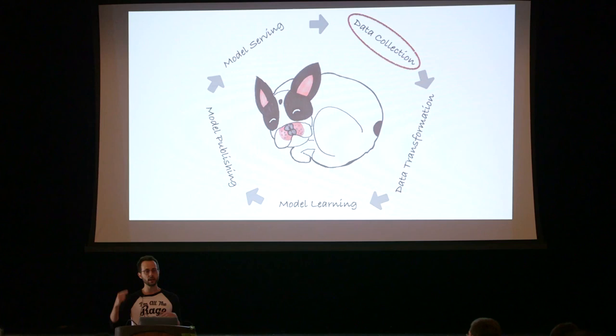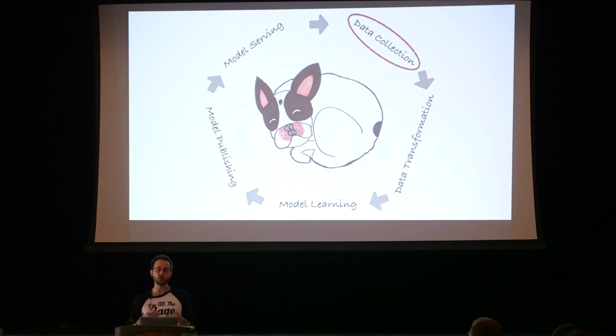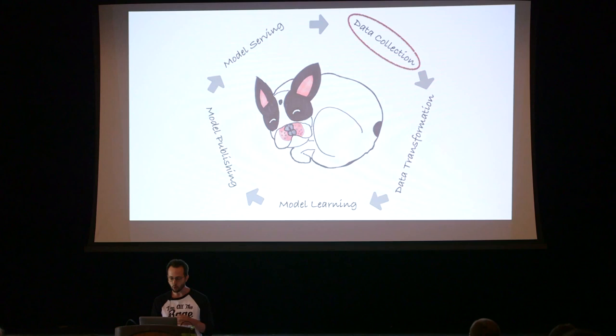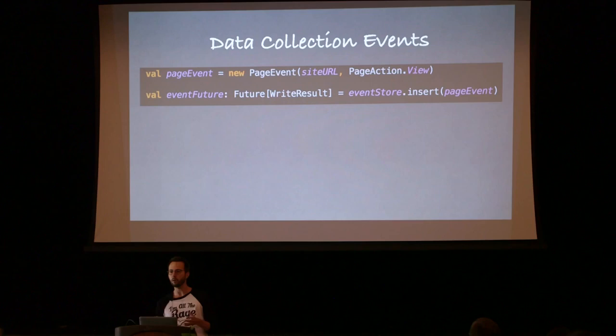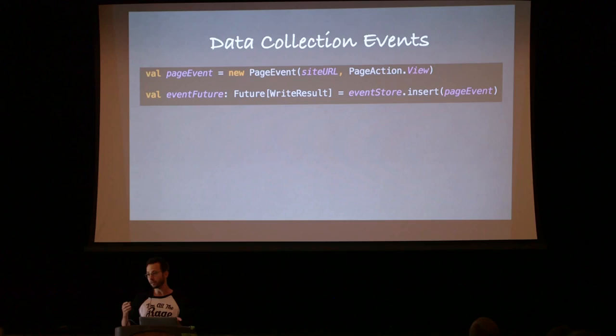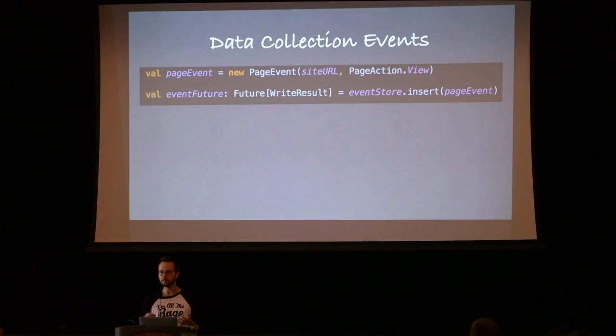We start with a component that most people don't usually think of as a machine learning task: data collection. In this context, we're acquiring data from the outside world — getting views and likes off the Instagram API and capturing them into our system. The way I'm proposing we do this is using an immutable data architecture. We acquire new page events from actions and write them into our event store. The event store could be anything from a distributed database like MongoDB or Cassandra, or something more like Kafka, where we have a distributed commit log.